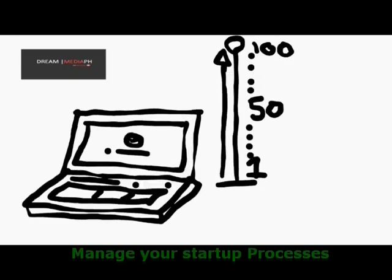Fifth is managing startup processes. There are basic startup processes we cannot change — the default system files that need to start before we can use our computer properly. But some applications, when we install them, are automatically set to run at startup. This does not mean we cannot disable them. For applications other than system files, we can disable them from startup. This will make our computer open more quickly. Also, with fewer running applications, it will reduce the consumption of processor and RAM — similar to why running in safe mode makes a computer faster than a normal startup.